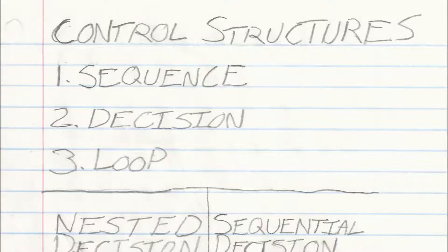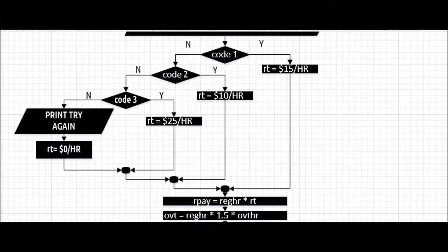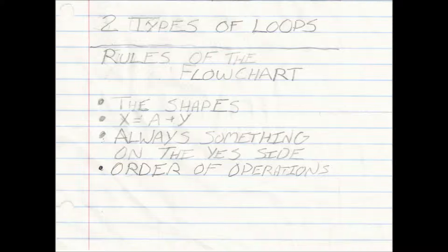Control structures: sequence, decision, loop. We have a nested decision also, and a sequential decision. Here's the sequence. Here's the nested decision. Sequential decision. Two types of loops — we'll get into loops later.